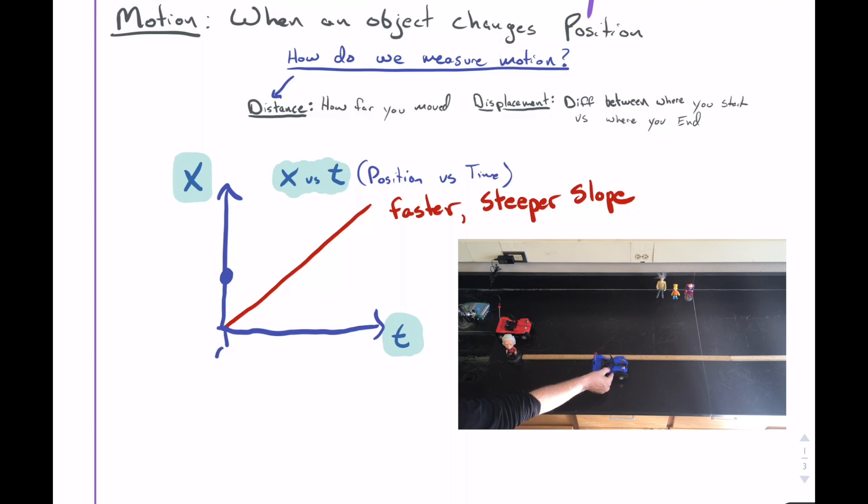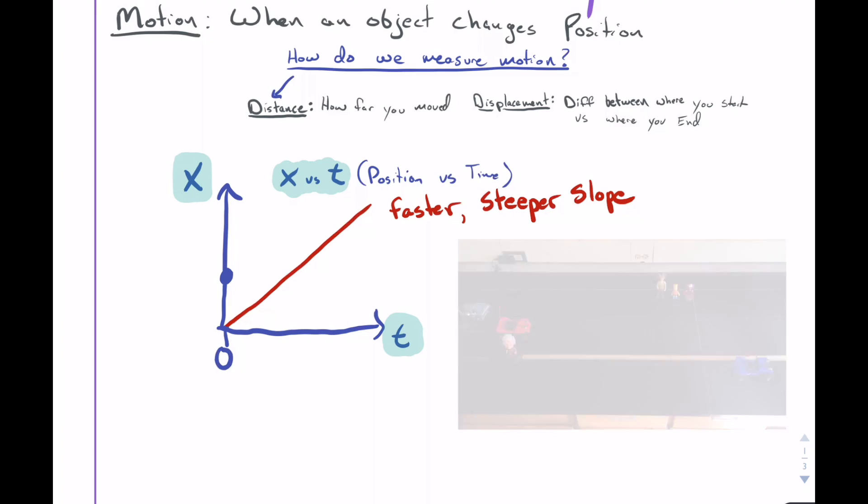On a position versus time graph, if you look back where time equals zero, the y-intercept will actually give you the object's position. Since the blue car started up here, which wasn't at zero, that is the blue car's starting point.